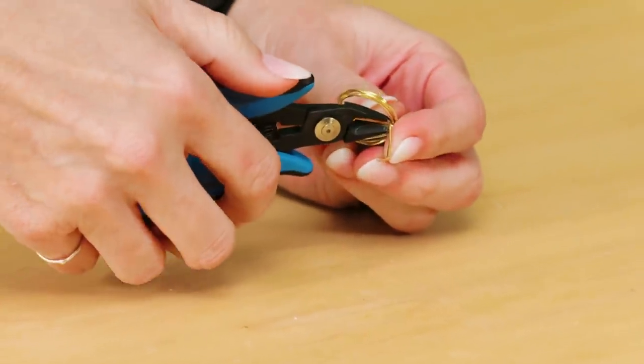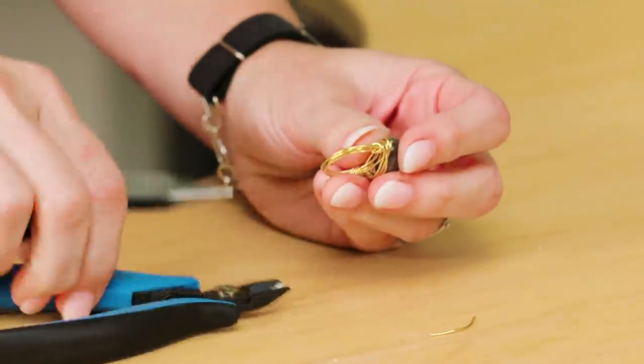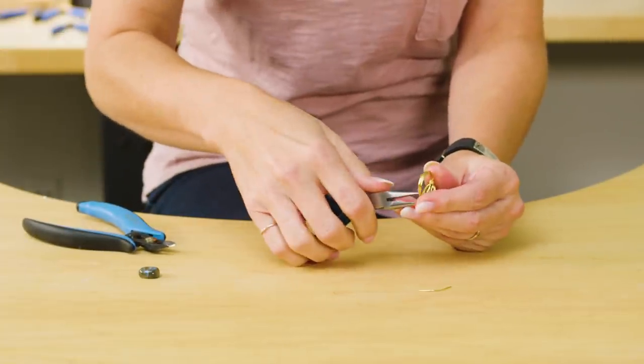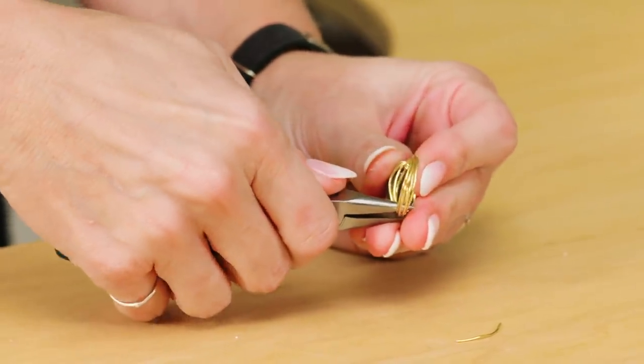And we're going to take this flush cutter and clip off the wire underneath. And then you want to make sure to take your chain nose plier and just compress those wires on the inside so that you don't feel them when you wear the ring.